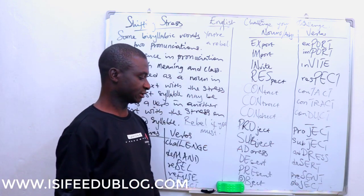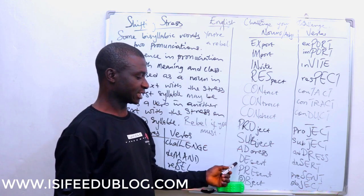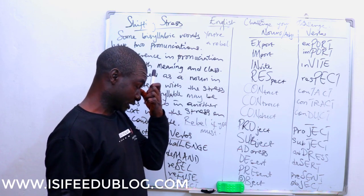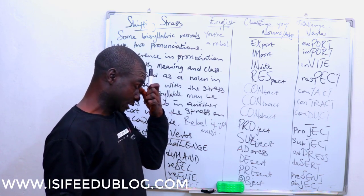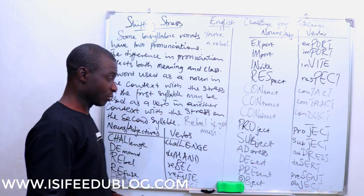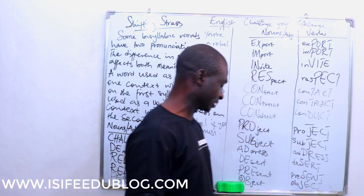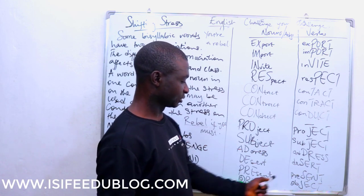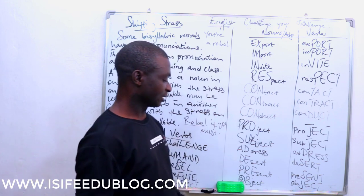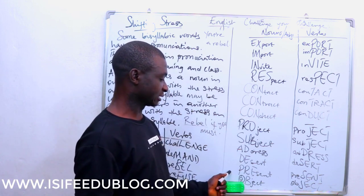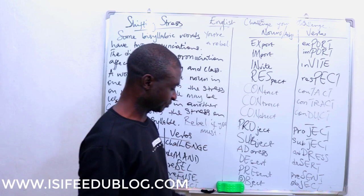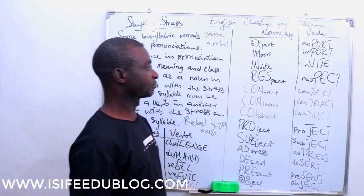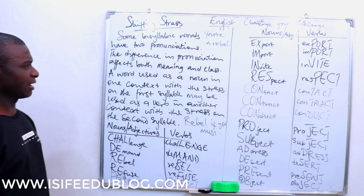'DEsert' — that is a barren place, a place of only sand; it's called a 'DEsert'. 'DeSERT' means to vacate, to leave a place completely so that nobody is found there — the place is deserted. 'PREsent' is the noun — 'he gave me a Christmas PREsent'; 'preSENT' is the verb — 'he preSENTed a card to me'. Similarly, 'OBject' is the noun and 'obJECT' is the verb.